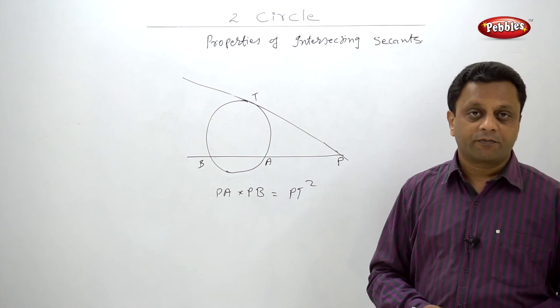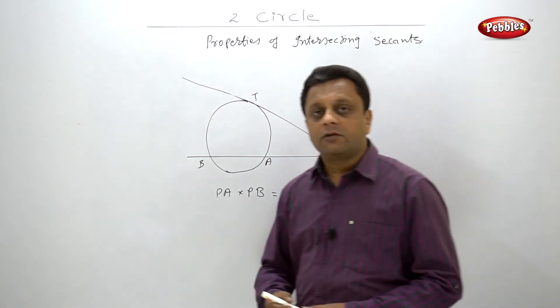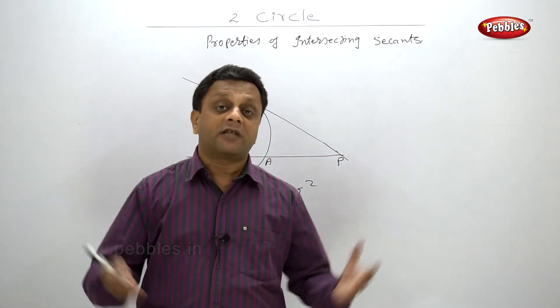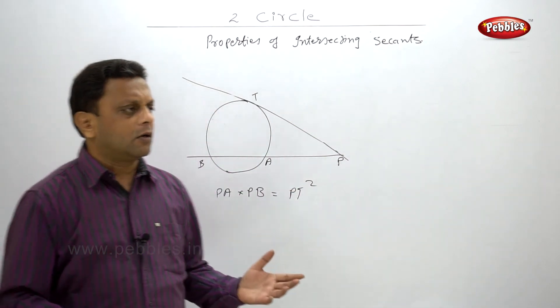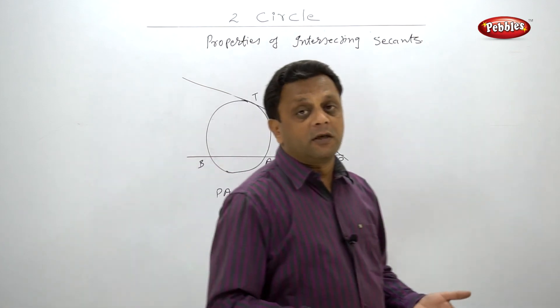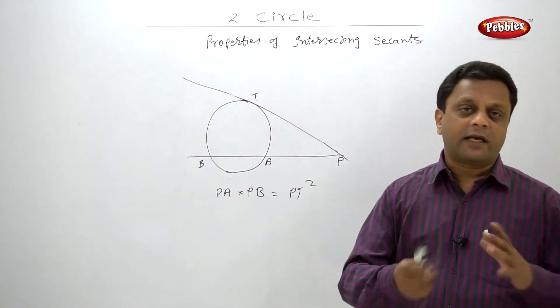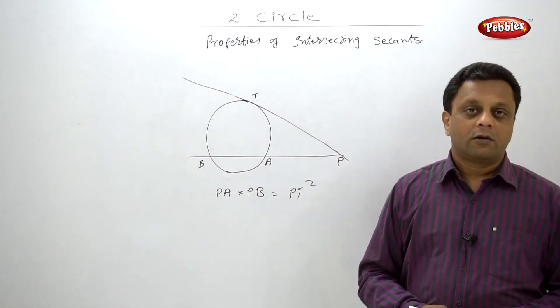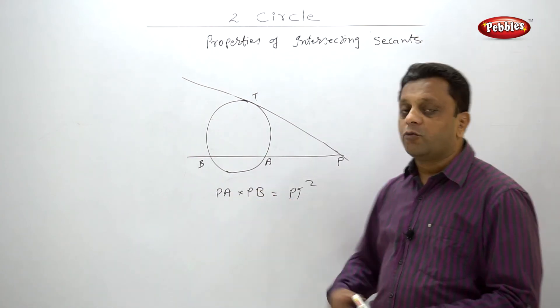There will be some combination, like if the problem is connected with cyclic quadrilateral or some angles in the common arc, something like that. Because this is very simple, you may be given three out of four dimensions of segments and the fourth is to be found out.